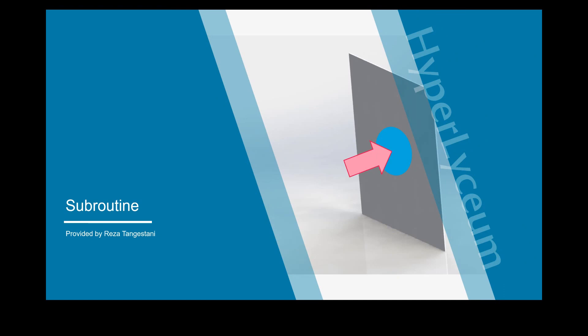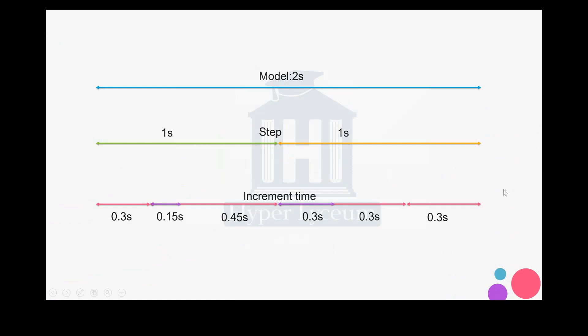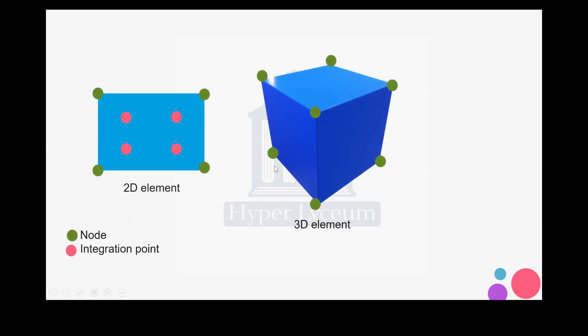Before starting, we need to know a few things. Each model contains a few steps — for example, if we have a model that is two seconds long, it might have two steps of one second each. Each step is divided into a few increment times, so each model has steps and increment times.